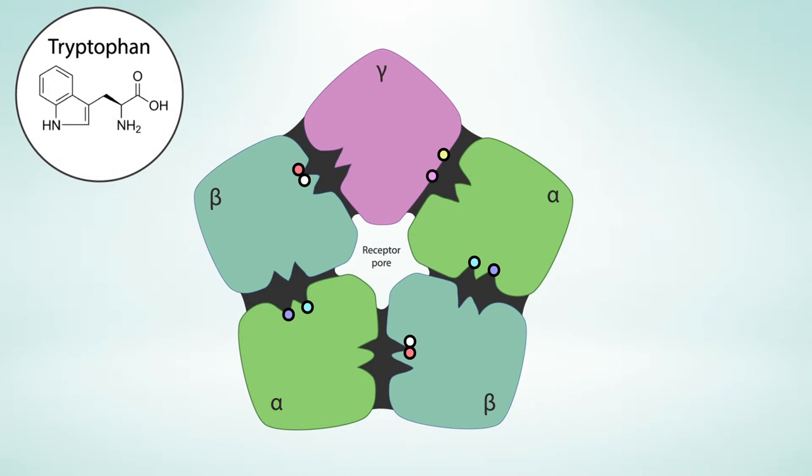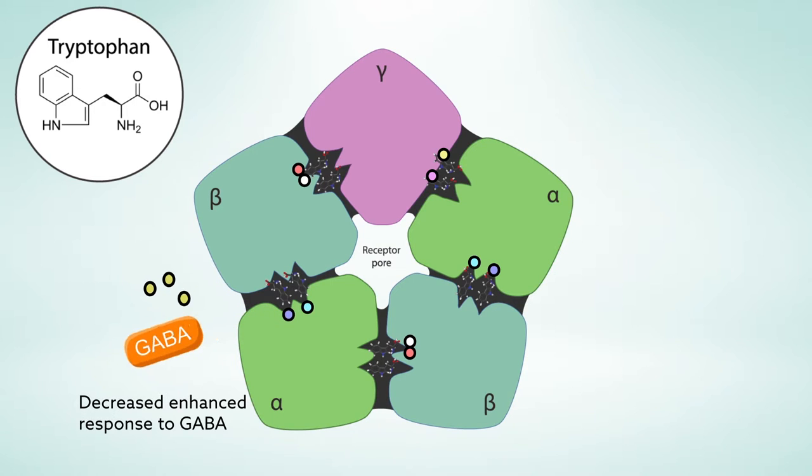In one set of experiments, the researchers changed these residues to bulky tryptophans. At some locations, such as between the alpha and beta subunits, mutations reduced the ability of the anesthetic to enhance the receptor's response to GABA, suggesting the drugs normally occupy these sites.